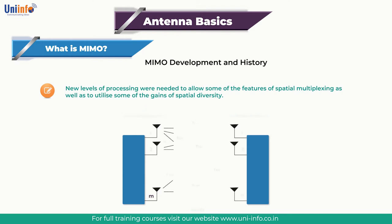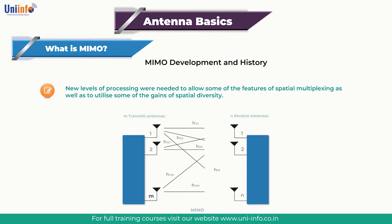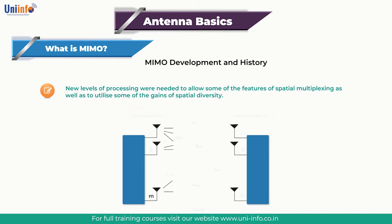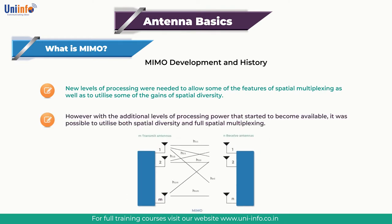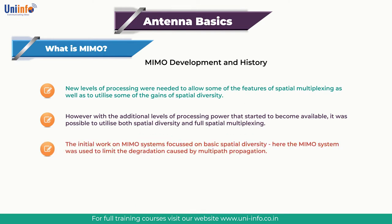Up until the 1990s, spatial diversity was often limited to systems that switched between two antennas or combined the signal to provide the best signal. Various forms of beam switching were also implemented, but given the levels of processing available, systems were generally relatively limited. However, with the additional levels of processing power that started to become available, it was possible to utilize both spatial diversity and full spatial multiplexing. The initial work on MIMO systems focused on basic spatial diversity.